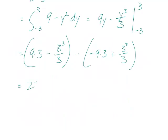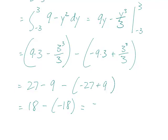And this is 27 minus, 3 cubed is 27, that's good. So, that's 27 minus 9, minus minus 27 plus 9. So, that's 18 minus minus 18, or that would be 36.